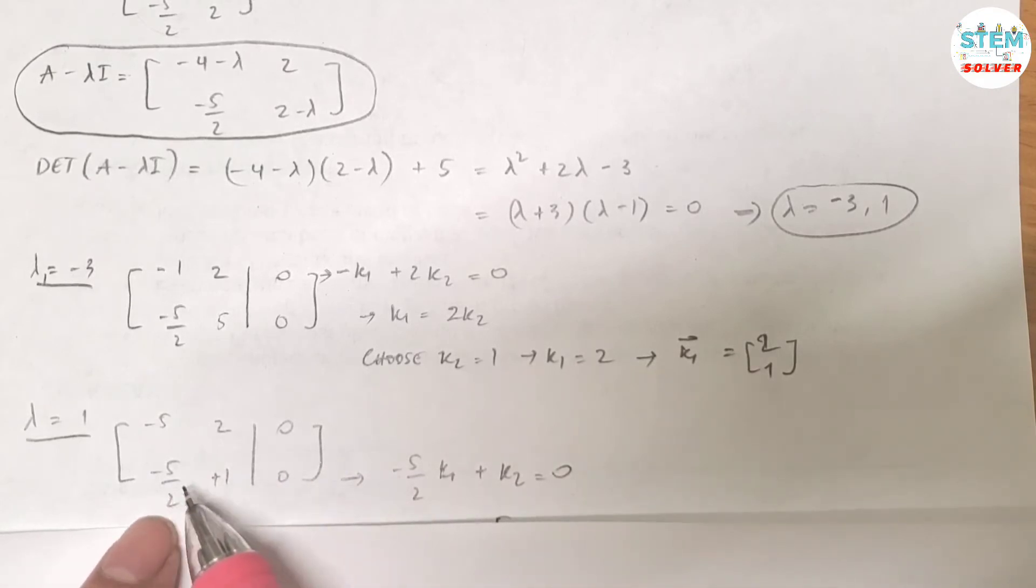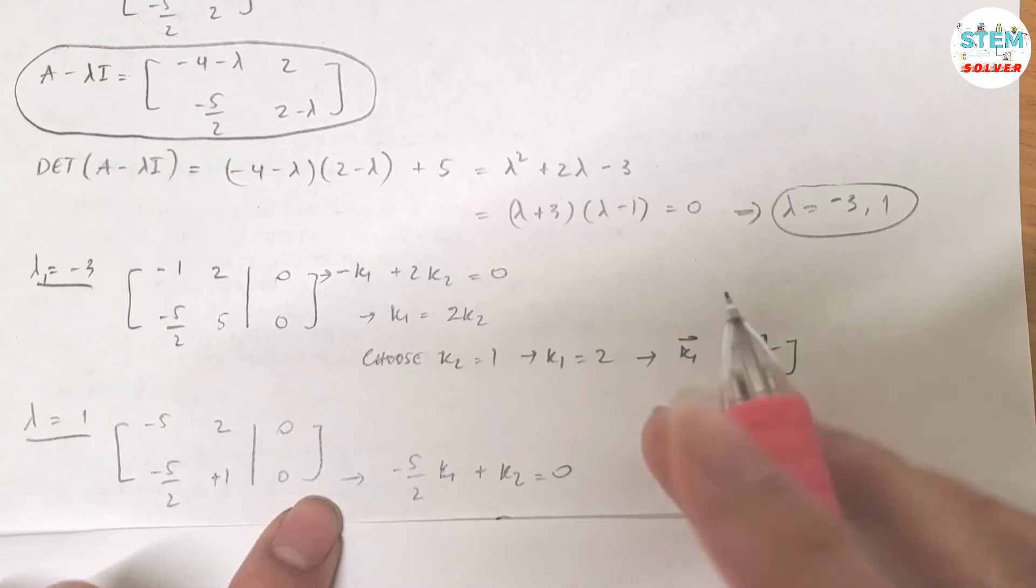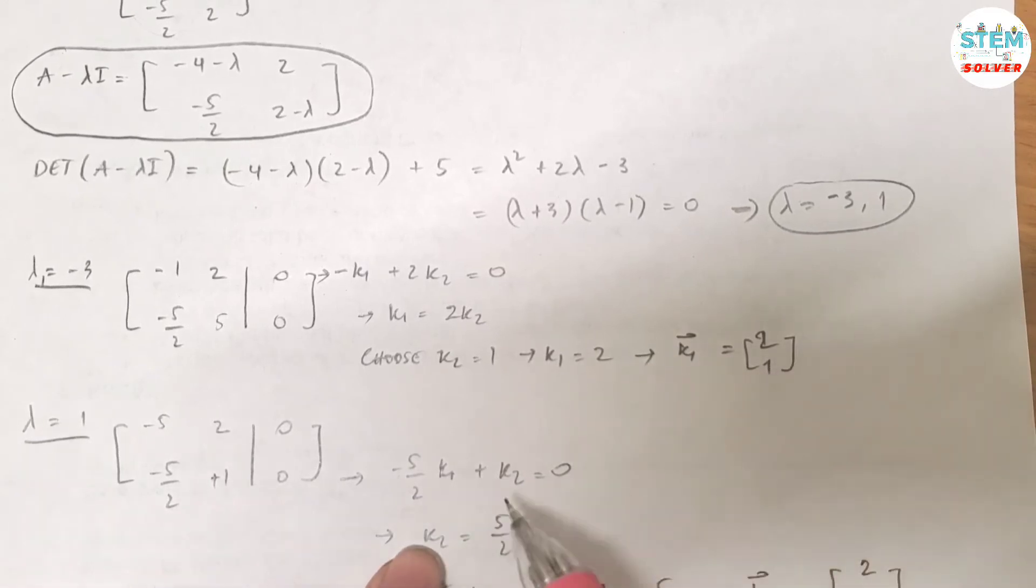So I'm gonna go with this row. For this one I have negative 5 over 2k1 plus k2 equals 0. That means that k2 equals 5 over 2k1. So if I choose k1 equals 2, I got k2 equals 5.